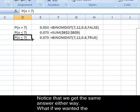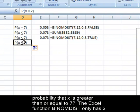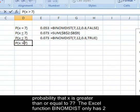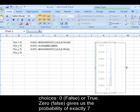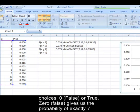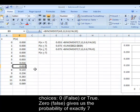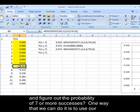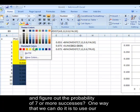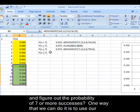Well, what if we wanted the probability that x was greater than or equal to seven? The Excel function BINOMDIST only has two choices, zero or false, and true. Zero gives you the probability of exactly seven successes. True gives us seven or fewer successes. So how would we go and figure out the probability of seven or more successes? Seven or more.